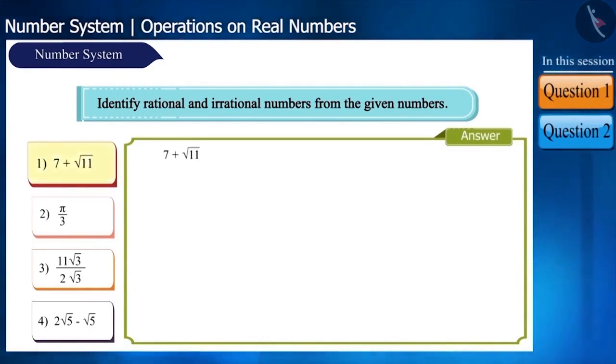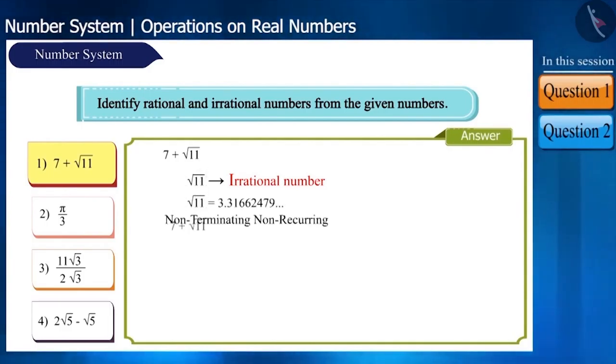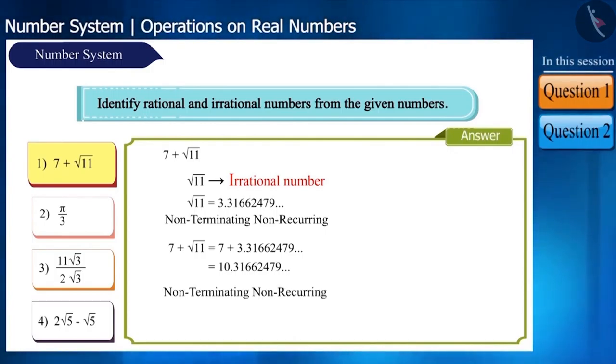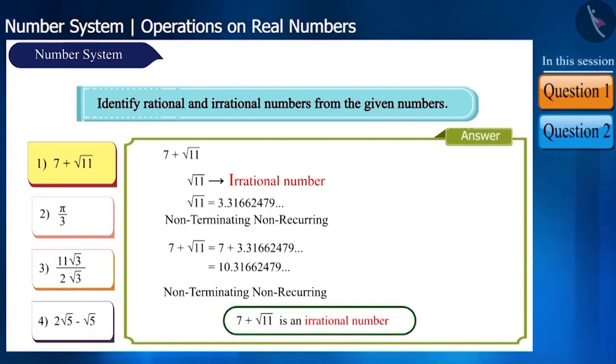In the first number, root of 11 is an irrational number. Its decimal expansion is non-terminating, non-recurring. Even if we add 7 to it, its decimal expansion will be non-terminating, non-recurring. So it is an irrational number.